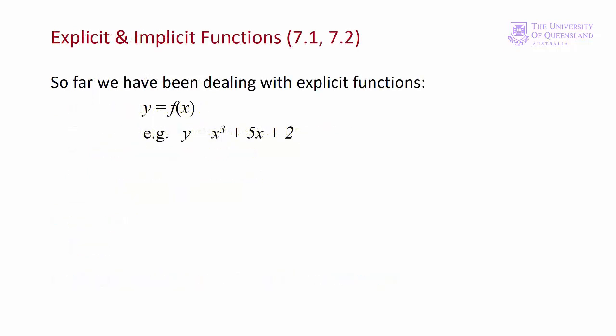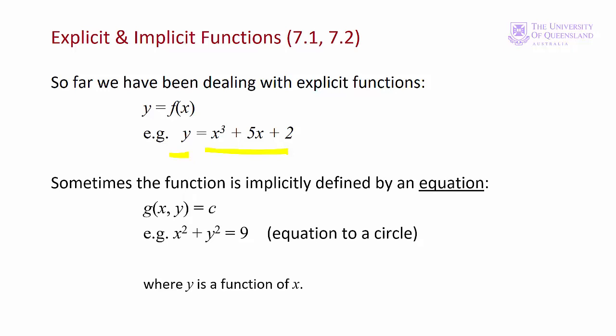In the first four lectures we dealt with explicit functions — functions in the form y = f(x). We have the exogenous variable on the right-hand side and the endogenous, or dependent, variable on the left-hand side. In other words, the dependent variable is written explicitly in terms of the independent variable. This is not always the case. In some functions, such as the equation of a circle, the dependent variable is not isolated on one side of the equation. These are implicit functions.